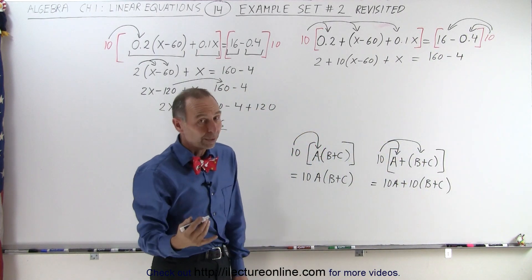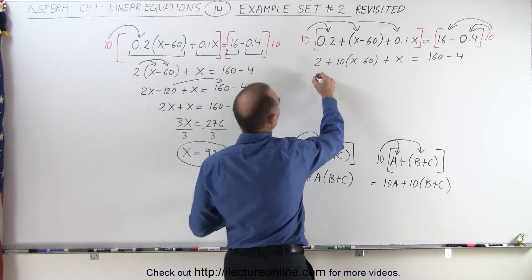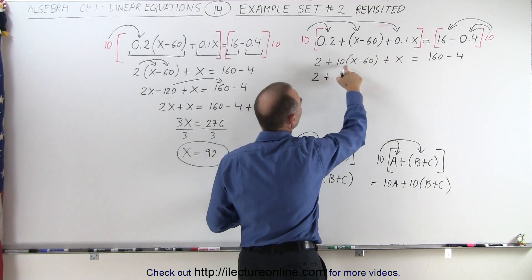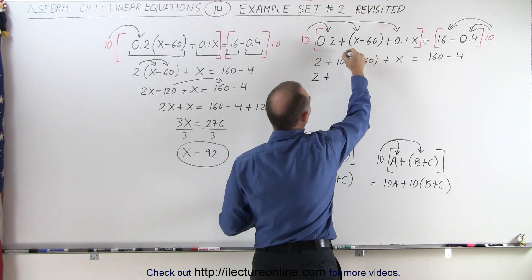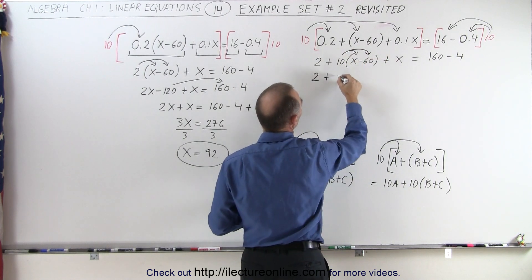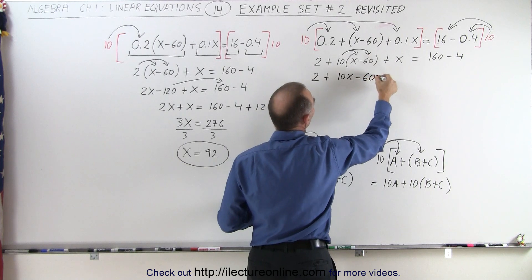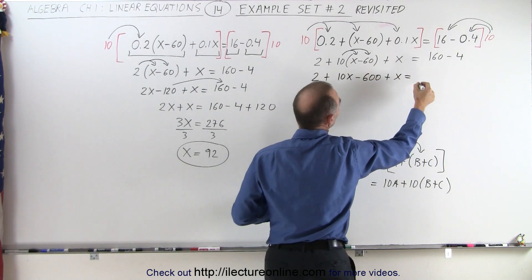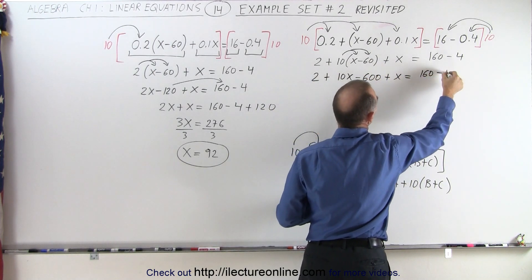Now we need to get rid of the parentheses. So here we get 2 plus now the 10 would be distributed over the x minus 60 so we multiply it times x and the minus 60. So this becomes 10x minus 600 plus x is equal to 160 minus 4.